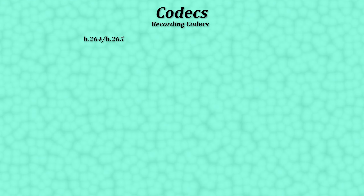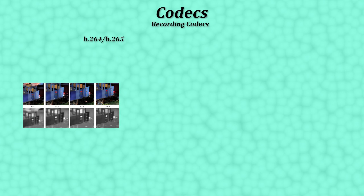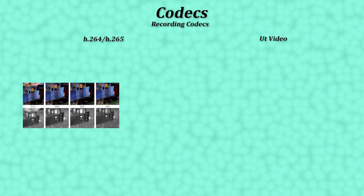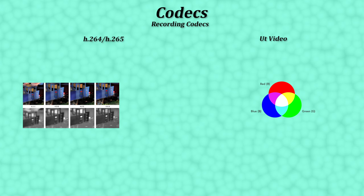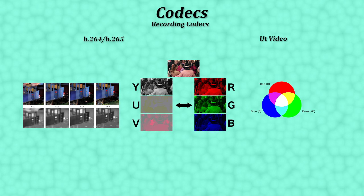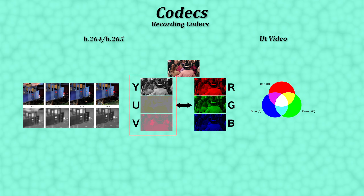H.264 and H.265 are lossy codecs with great compression. H.264 is the most commonly used capture codec at the consumer level because it allows for great compression, although in exchange for some visual artifacting in the final video. UT Video, on the other hand, records in RGB and is a mathematically lossless video codec, which means truer colors, color correction and VFX are possible, and temporal changes like slow motion are more accurate. Because UT Video files are barely compressed, any changes you make in the nonlinear editor will look far and away much better than the same changes made to the same video compressed in H.264.